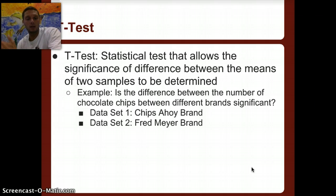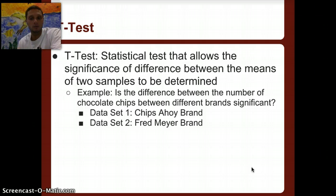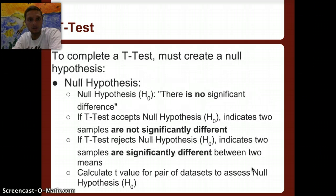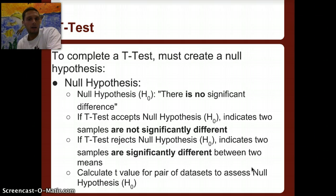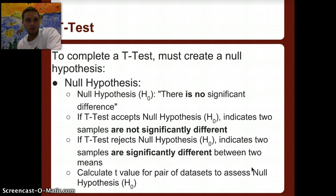The t-test allows us to test the significance of difference between the means of two samples. We can compare the mean number of chocolate chips for Chips Ahoy and Fred Meyer brands to see if there's a statistically significant difference. To complete a t-test, you first create a null hypothesis, which states that there is no significant difference between the two data sets. If the t-test accepts the null hypothesis, the samples are not significantly different; if it rejects it, they are.